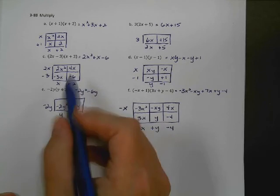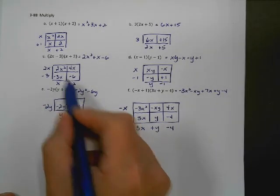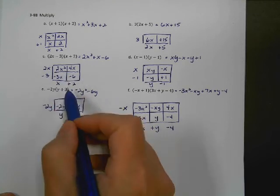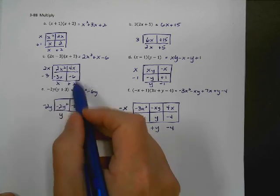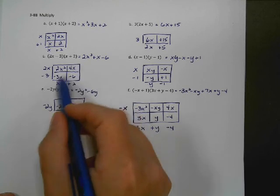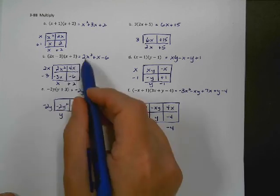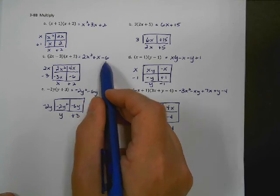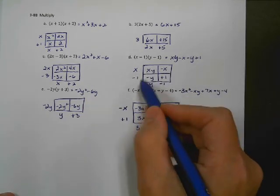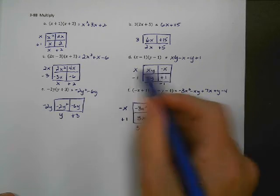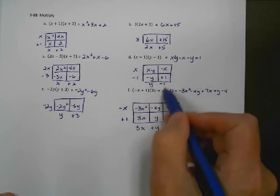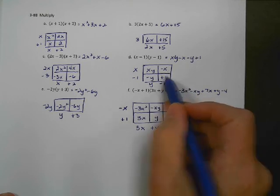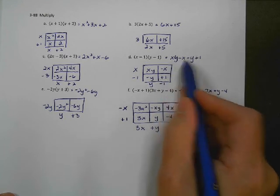Next one: binomial times binomial, 2X minus 3 times X plus 2. That gives us 2X squared, negative 3X, 4X, and negative 6. Like terms: 4X minus 3X is X. So 2X squared plus X minus 6. For X minus 1 times Y minus 1: the four boxes give XY, negative Y, negative X, and positive 1. None are like terms, so the answer is XY minus X minus Y plus 1.